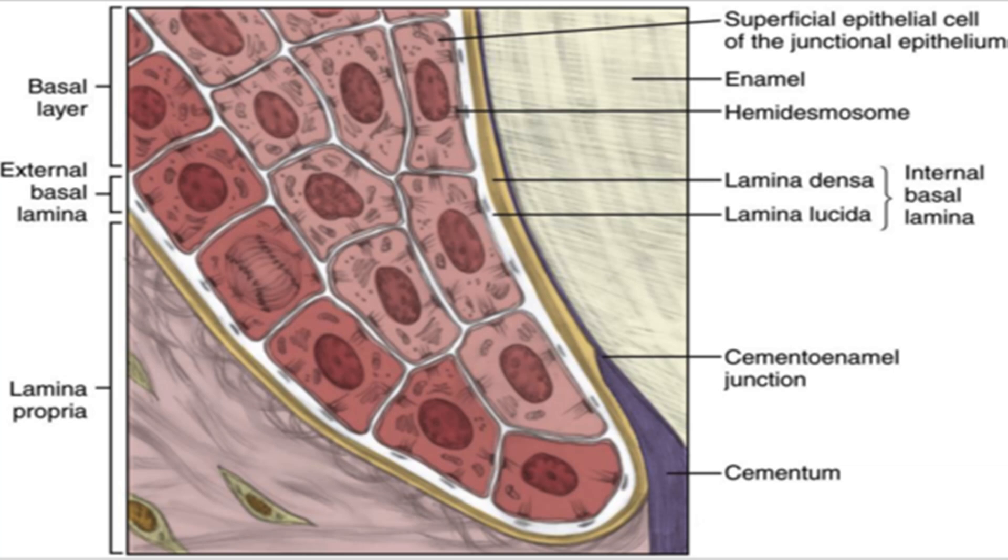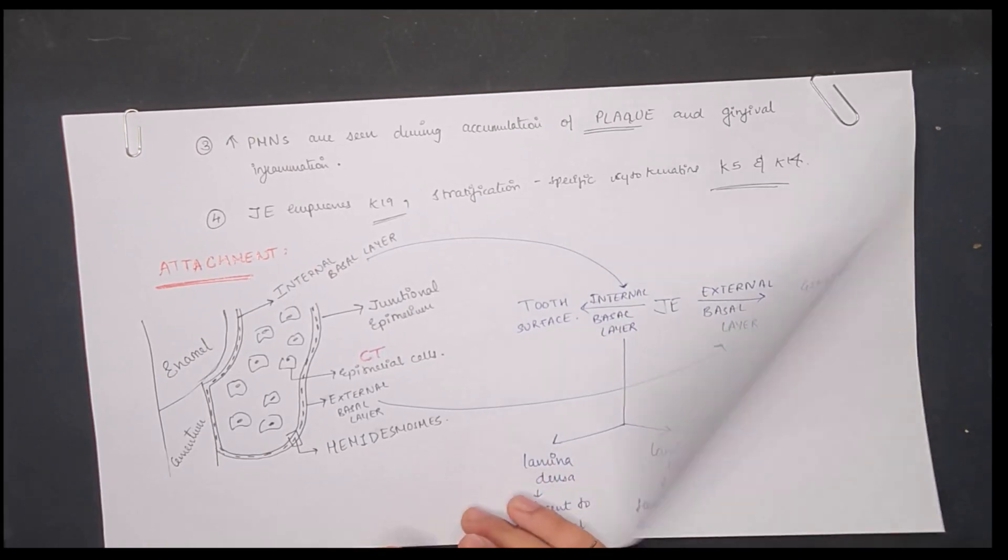The image shows the superficial epithelial layer of junctional epithelium and enamel, the hemidesmosomes which are present. Then you can see one is lamina densa and the other is lamina lucida. The lamina densa is attached to the enamel and lamina lucida is associated with hemidesmosomes, which help in the attachment of the junctional epithelium to the enamel. One should notice this for any pathology or further medical understanding.